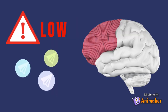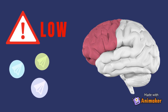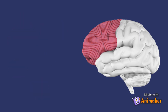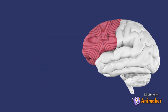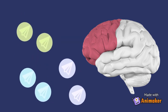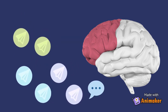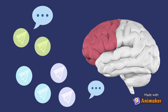Brain scientists have found that deficiencies in specific neurotransmitters underlie many common disorders, including anxiety, mood disorders, and anger control problems. Neurotransmitters are chemical messengers that brain cells use to communicate with each other. Each type of neurotransmitter carries specific information.